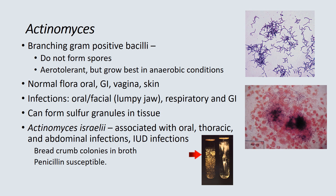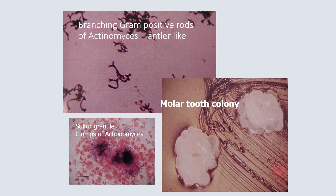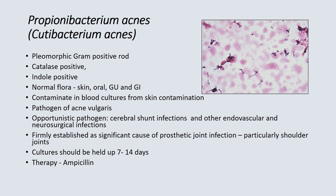Actinomyces is a branching gram-positive bacilli that does not form spores. It is aerotolerant at times but best grown anaerobically. It is normal flora in oral, GI, vaginal, and skin areas. Infections include oral-facial actinomycosis causing lumpy jaw, and respiratory and GI infections. Classically, they form sulfur granules in tissue — a micro colony concretion. Actinomyces israelii is the most featured organism in the genus, associated with oral, thoracic, and abdominal infections, classically IUD infections. It causes breadcrumb colonies in broth and is susceptible to penicillin. The gram stain of Actinomyces often looks like antlers, and A. israelii can form a molar tooth colony on media.